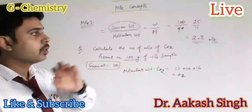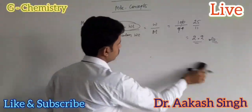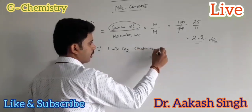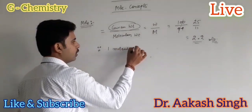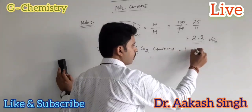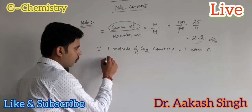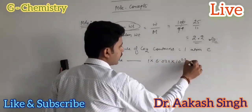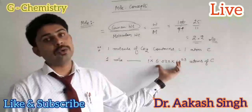Next, how many carbon atoms are present in 2.2 moles of CO₂? Since 1 molecule of CO₂ contains 1 atom of carbon, 1 mole will contain 1 into 6.022 into 10 to the power 23 atoms of carbon, because 1 mole contains 6.022 into 10 to the power 23 molecules.